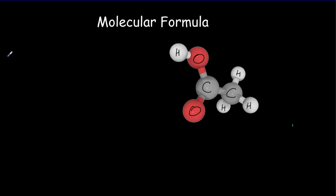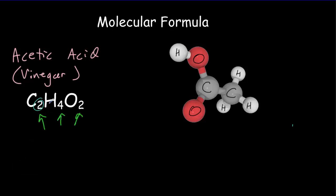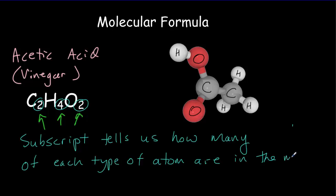Turns out this molecule has the name acetic acid. It's also known as vinegar. And we write the molecular formula as C2H4O2. So these subscripts here, the 2, the 4, and the 2, they tell us how many of each type of atom are in the molecule. That's why we call it a molecular formula.